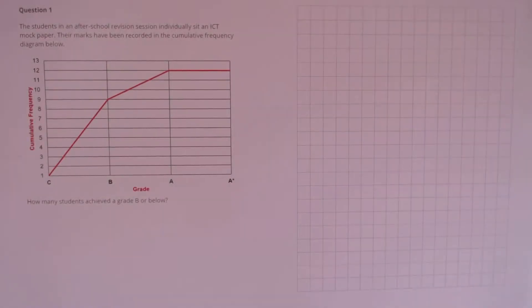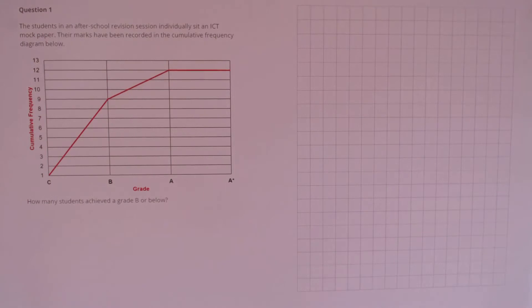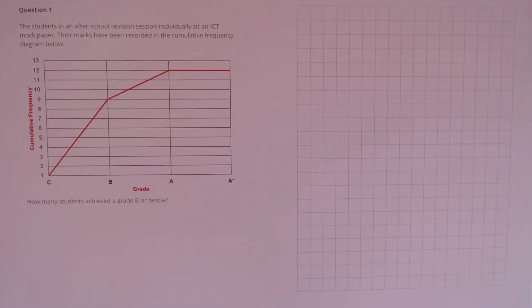Question 1. The students in an after-school revision session individually sit an ICT mock paper. The marks have been recorded in the cumulative frequency diagram below. How many students achieved a grade B or below?